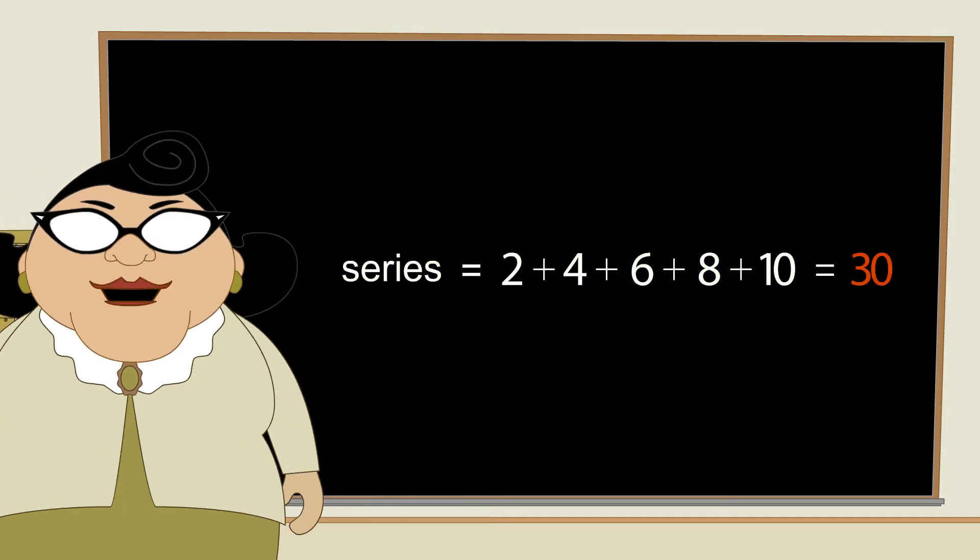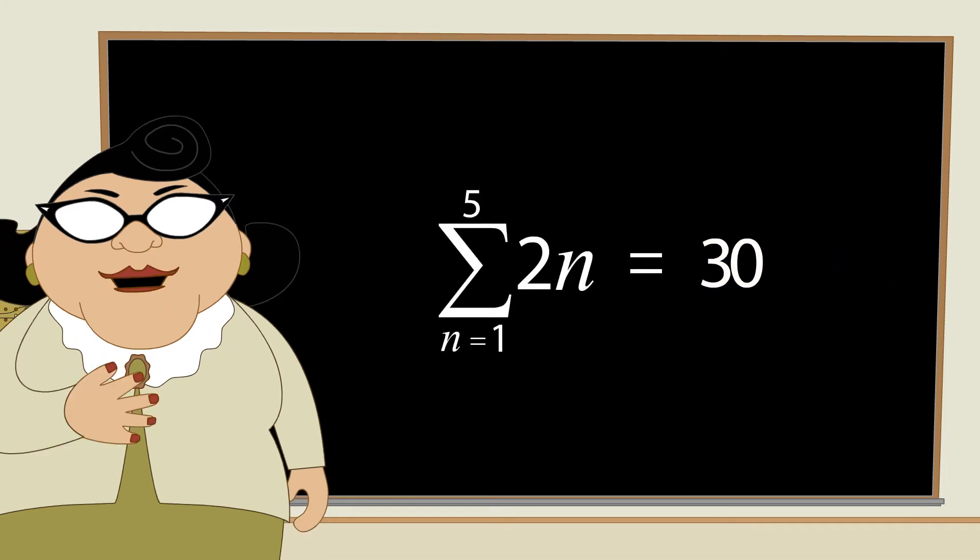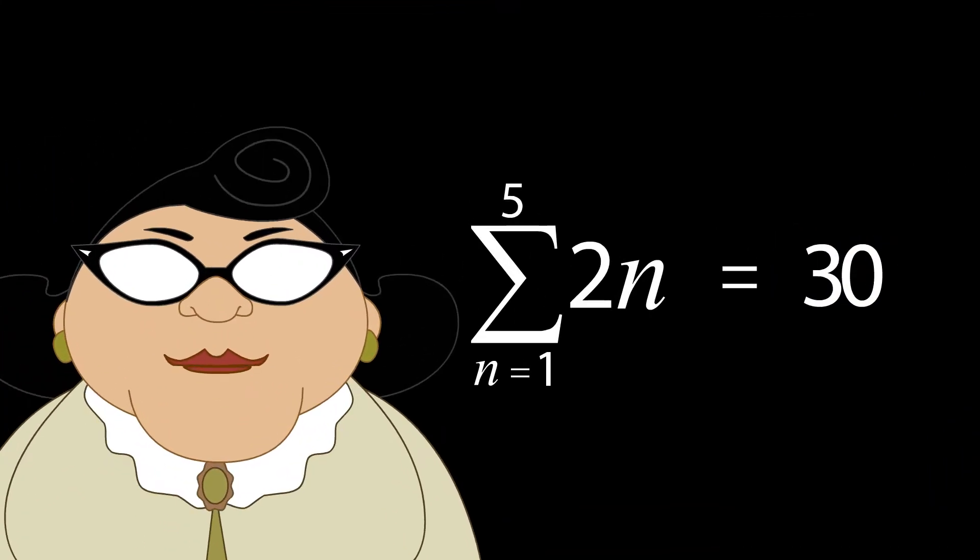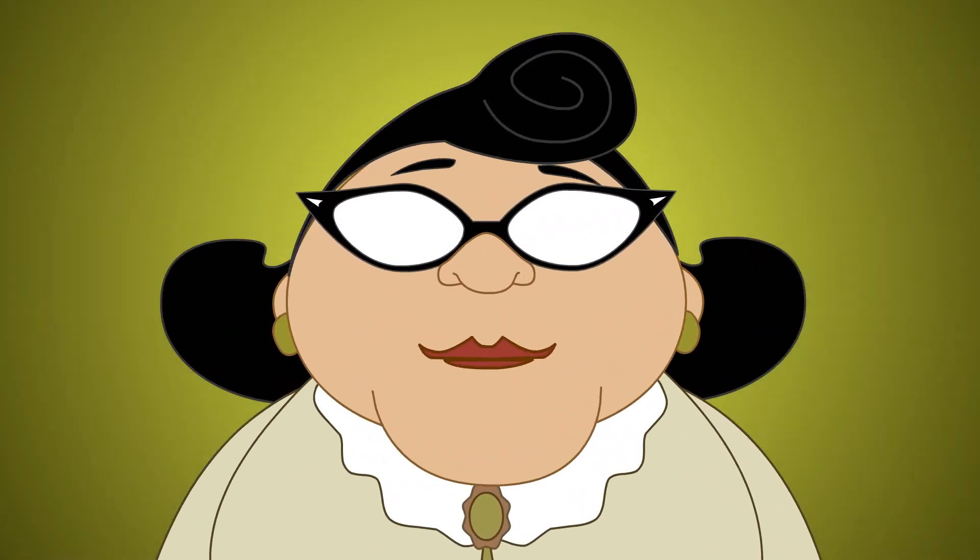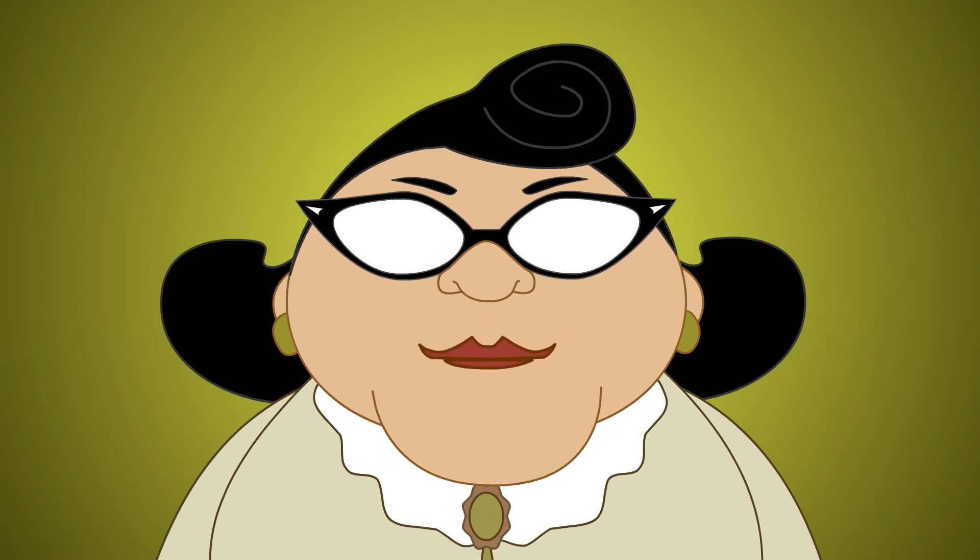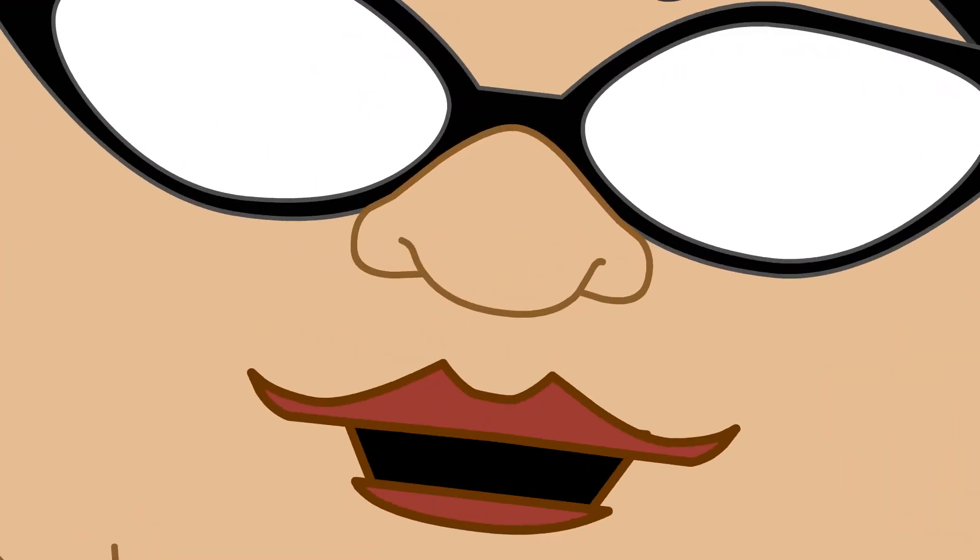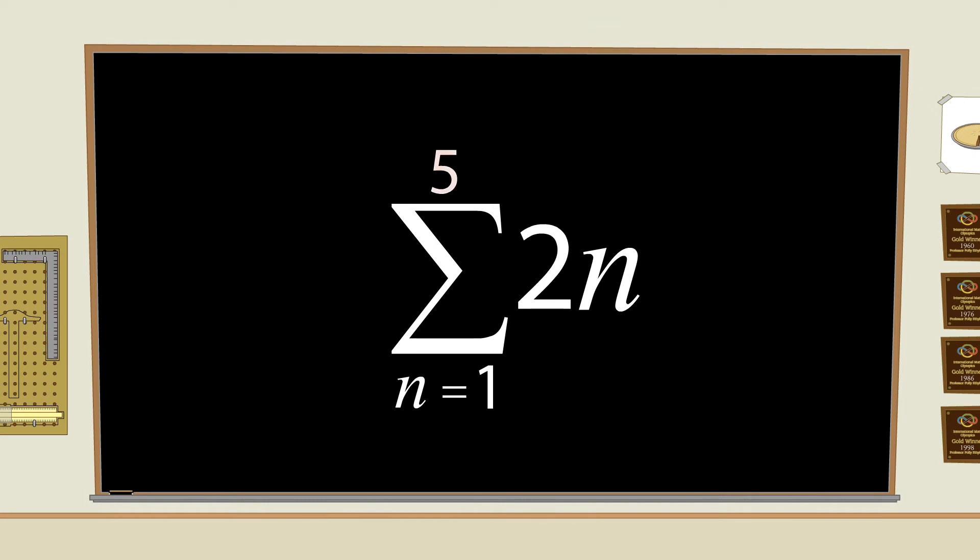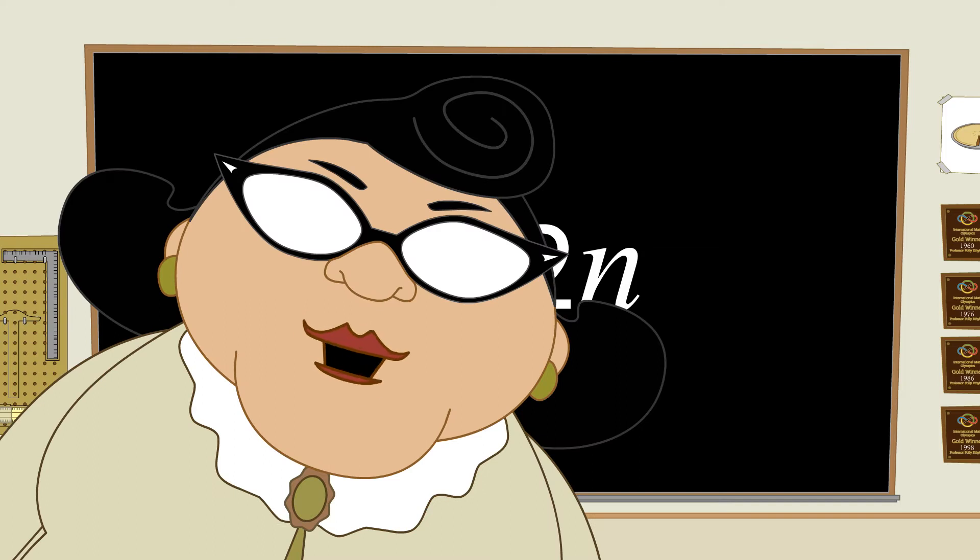The sum of the terms is 30, so this finite series is equal to 30. What if instead of stopping when n equals 5, we went on forever? In this case, instead of the 5 at the top, we would put a little infinity sign. This would then be an infinite series.